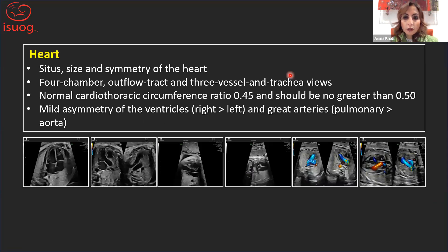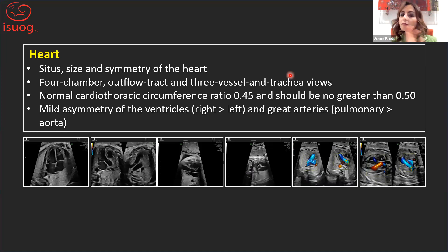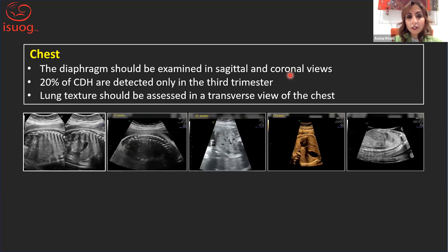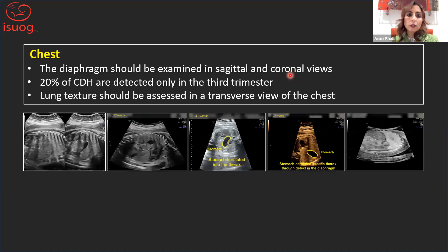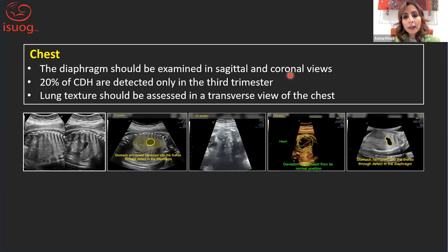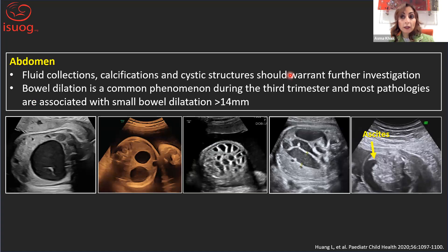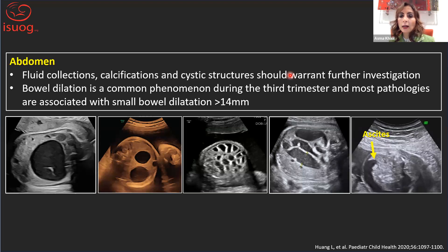The heart assessment is similar to the second trimester: site, size, symmetry, four-chamber view, outflow tracts, three-vessel trachea view. The normal cardiothoracic circumference ratio at this gestation is about 0.45 and should not exceed half the chest size. Mild asymmetry of the ventricles with the right ventricle larger than the left, or the pulmonary artery larger than the aorta, is common, but a significant difference would require fetal echo. For the chest, look at the diaphragms — about 20% of congenital diaphragmatic hernias are detected only in the third trimester — and the lung texture. For the abdomen, look for abdominal cysts, ascites, calcification, and bowel dilatation; small bowel dilatation more than 14 mm is most associated with pathology.